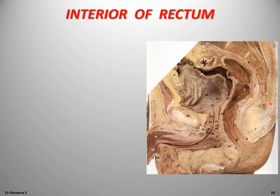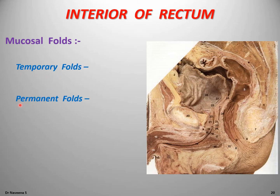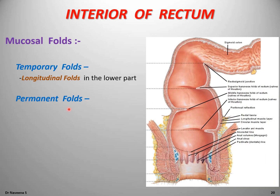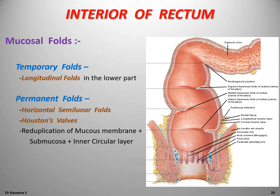The interior of the rectum shows mucosal folds of two types: temporary and permanent. Temporary mucosal folds are longitudinal folds in the lower part of the rectum that disappear when the rectum is distended. Permanent mucosal folds are horizontally placed, semilunar-shaped folds called Houston's valves that do not disappear on distension. They are formed by reduplication of the mucous membrane along with submucosa and the inner circular layer, and lie along the concavities of the lateral curves of the rectum. They support the weight of feces when a person is in the upright position.